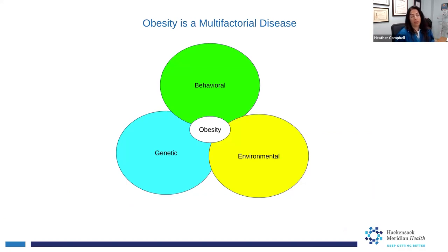Obesity is a multifactorial disease, most of which is hard to control. The genetic part of it is out of our control. Even the environmental part of it is out of our control. As you drive around, all you see is McDonald's, Wendy's, Burger King — fast food places.